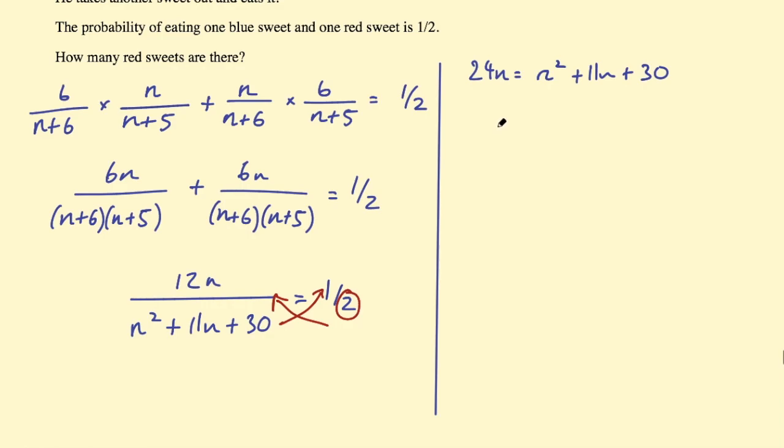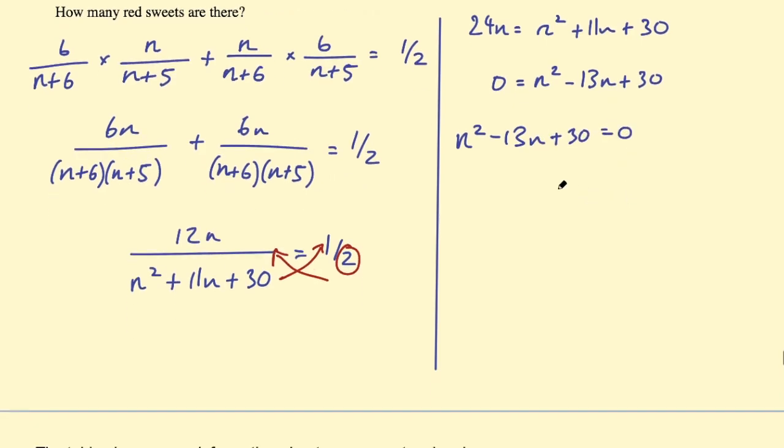And then simplify further. So subtract that 24n from this side, so that's going to be 0 equals n squared minus, now 11 minus 24, that's minus 13n plus 30. So I'll just switch it around so I have the quadratic on the left hand side, so n squared minus 13n plus 30 equals 0.